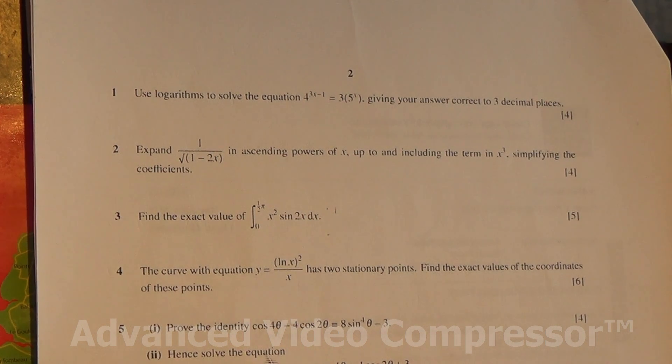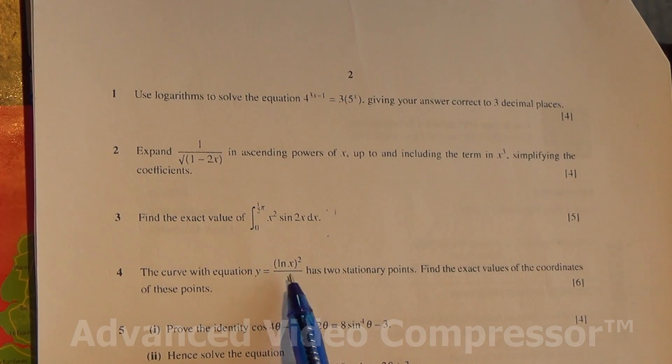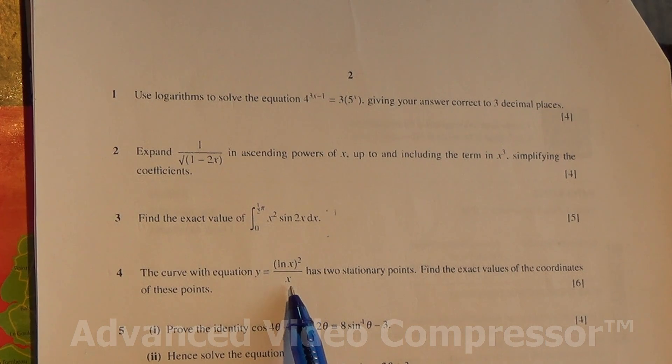Hi. Question number 4. The curve with equation y equals (ln x)² over x has two stationary points. Find the exact values of the coordinates of these points.